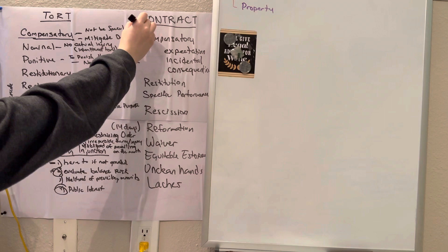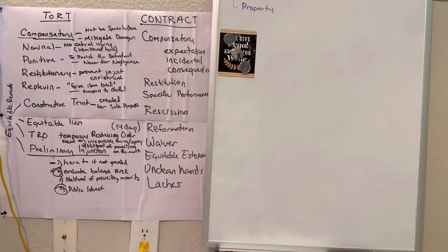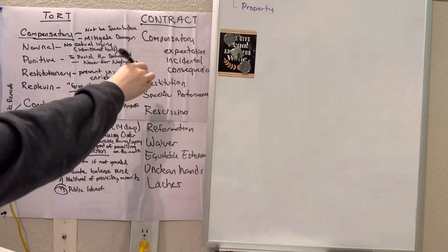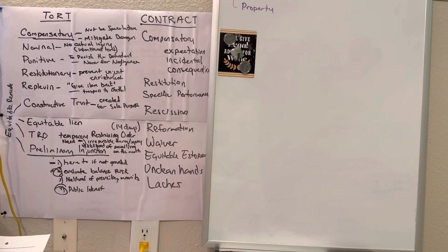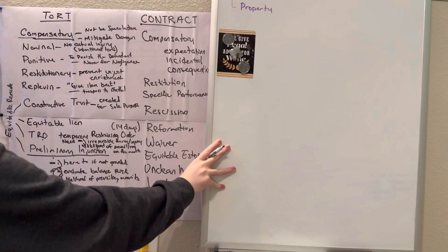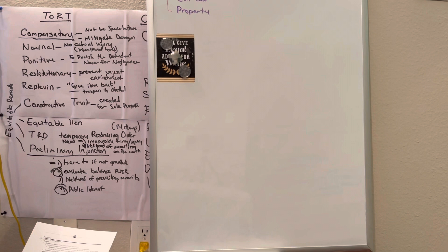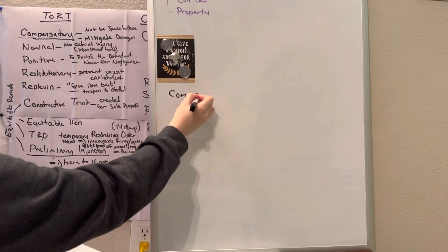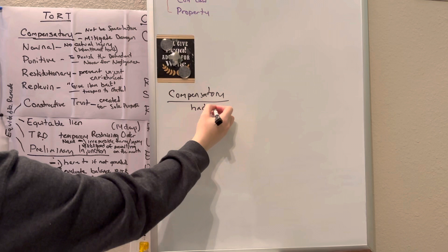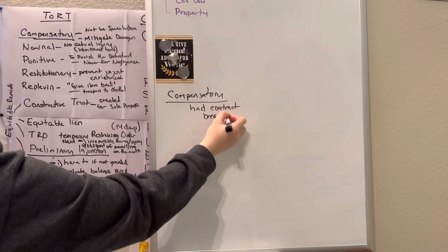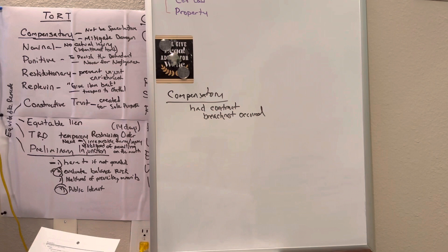Now we're going to move on to contract legal remedies. So we have two parties: plaintiff and defendant. Defendant breached the contract. What damages can the plaintiff seek? First one is compensatory damages. A party will recover the loss of value of the breaching party's performance, plus incidentals, plus consequentials, minus any expenses saved as a result of the breach. This is a little bit more of a math equation here. Compensatory damages are putting us in the position had the contract been fulfilled and breach not occurred.